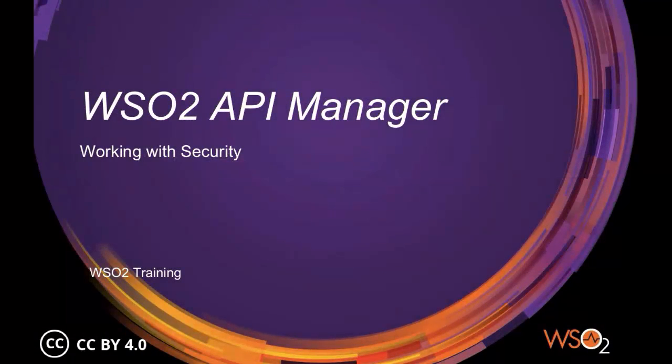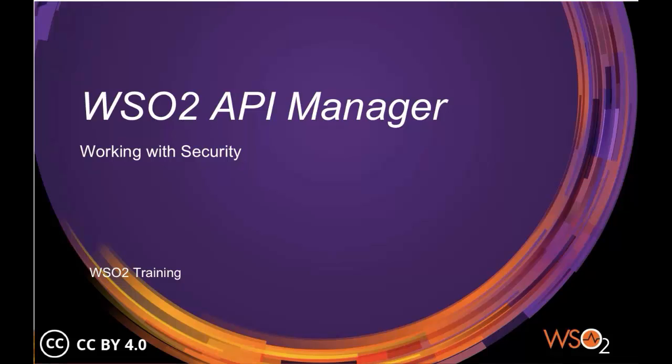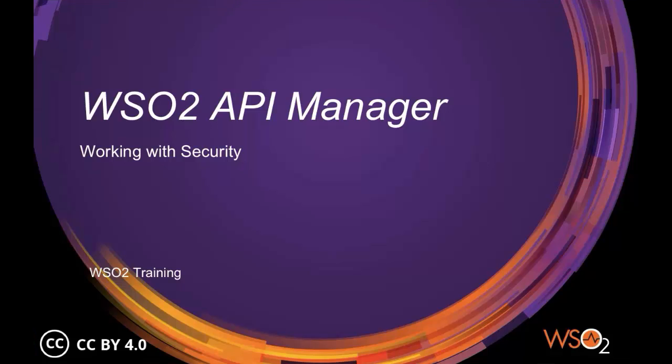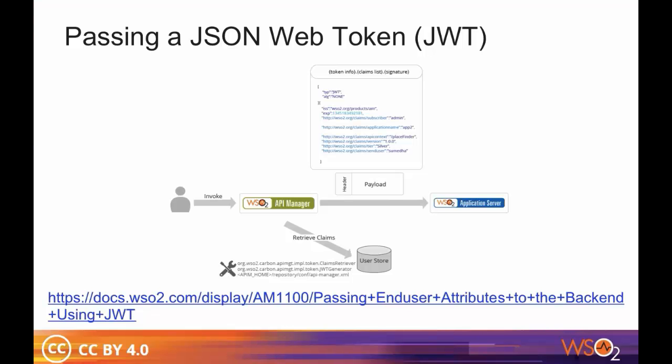Welcome to the fifth lesson in the series on WSO2 API manager. This lesson covers the topic working with security. A JSON web token or JWT is used to represent claims that are transferred between two parties such as the end user and the back end.